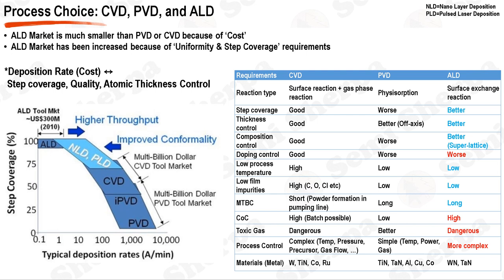In the world of semiconductor manufacturing, the choice of deposition method plays a critical role in determining the quality, efficiency, and cost-effectiveness of the resulting thin films. Three commonly used deposition techniques are chemical vapor deposition, CVD, physical vapor deposition, PVD, and atomic layer deposition, ALD. Each has its strengths and weaknesses, and the choice between them often comes down to a careful balancing act between cost, quality, and the specific requirements of the application.